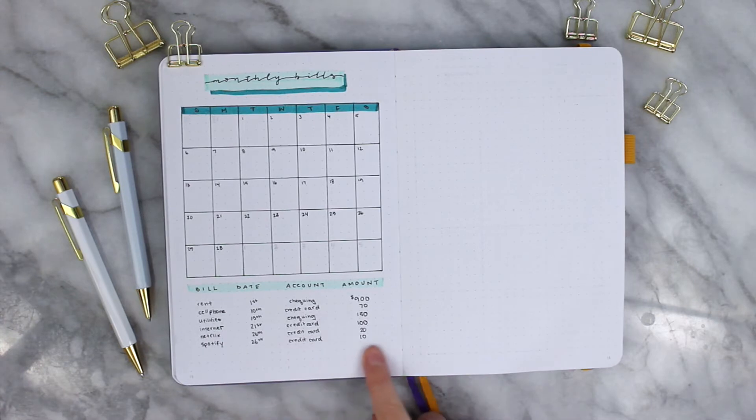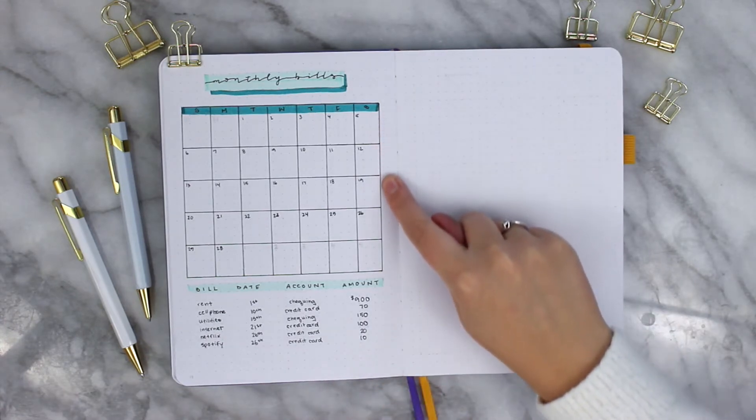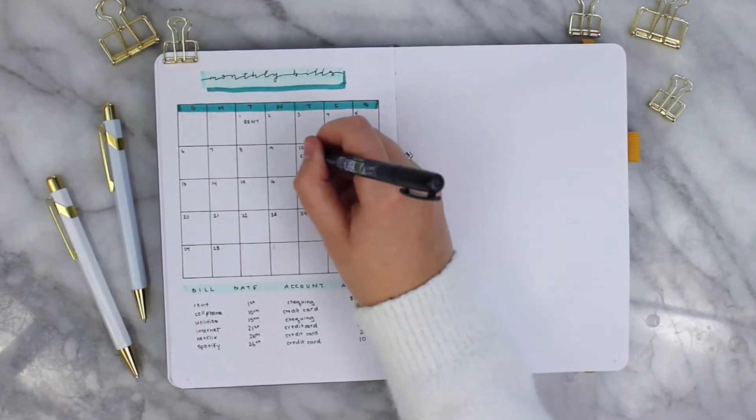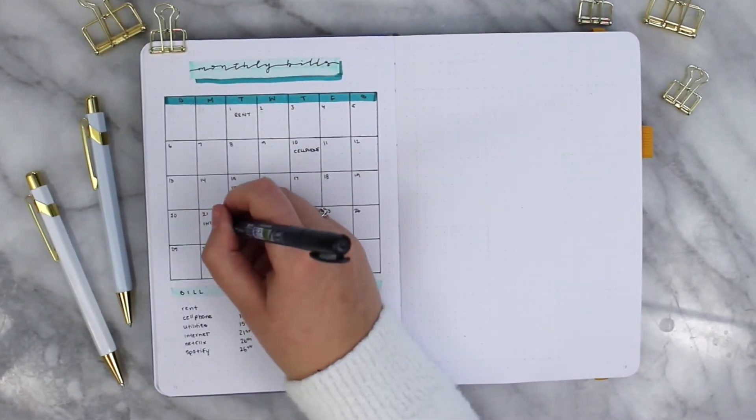I have the account for checking and credit card since those are the two that I use but if you use checks, that would be another category you could put down in your account.